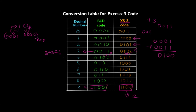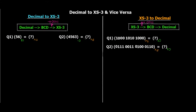To convert decimal to XS3: convert to BCD then add 3. The reverse process is to subtract 3, convert it back through BCD, and then get the decimal equivalent. The steps are: take the decimal number, represent each digit by its corresponding 8421 BCD code, then add 0011 (which is 3 in decimal) to each four-bit block to get the XS3 code.